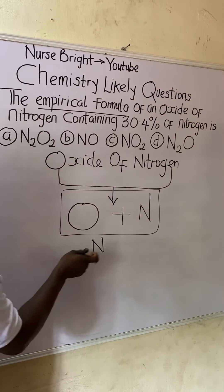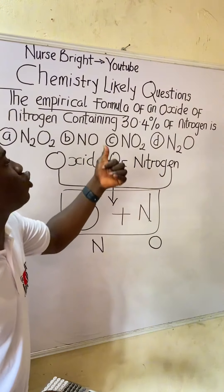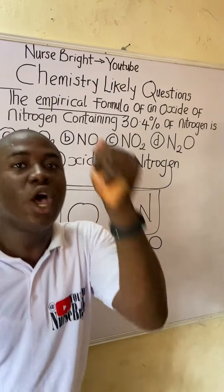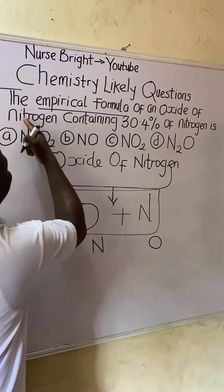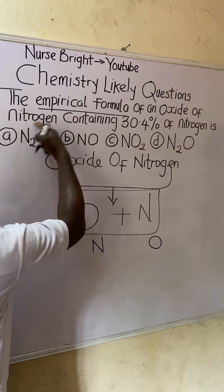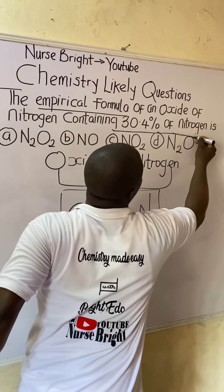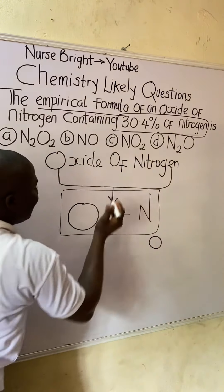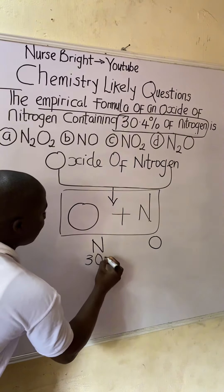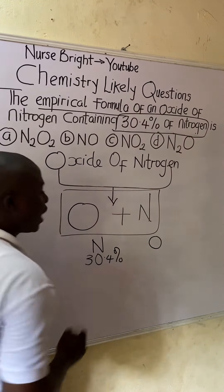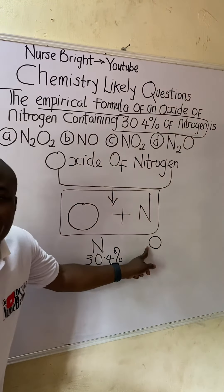First, rewrite the elements involved: nitrogen and oxygen. Then write out the percentages of the elements given. The question tells us the percentage of nitrogen is 30.4 percent. But notice — they did not give us the percentage of oxygen.